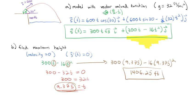So the cannonball shoots from 100 feet up and reaches a maximum height of 1,406.25 feet above the cannon — after 9.375 seconds. We could also find the horizontal distance at that point by plugging t = 9.375 into the x component, but the question didn't ask for that, so let's move on.